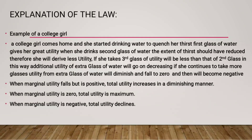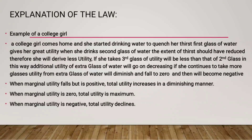Here is a simple example: a college girl comes home and starts drinking water to quench her thirst. The first glass of water gives her great utility. When she drinks the second glass, the extent of thirst has reduced, so she derives less utility. If she takes a third glass, utility is less than from the second glass. This way, the additional utility of each extra glass keeps decreasing. If she continues taking more glasses, utility will diminish, fall to zero, and then become negative. When marginal utility falls but is positive, total utility increases in a diminishing manner. When marginal utility is zero, total utility is at its maximum. When marginal utility is negative, total utility starts to fall.